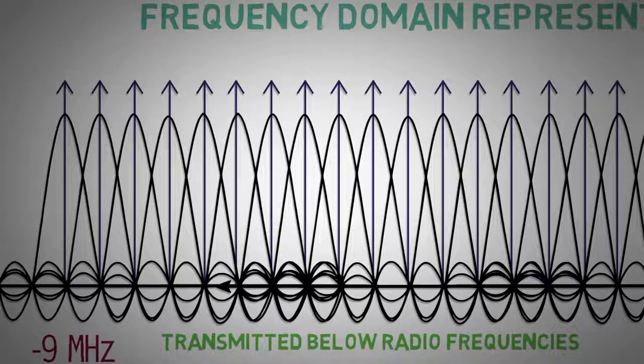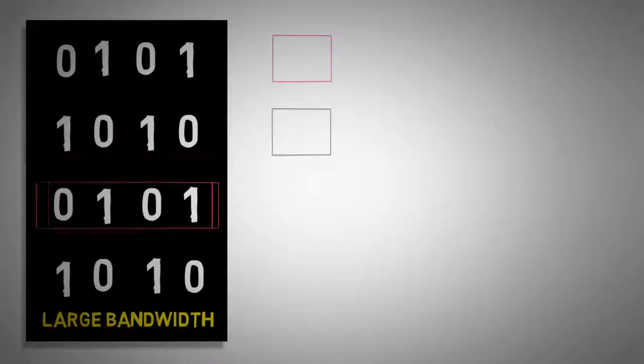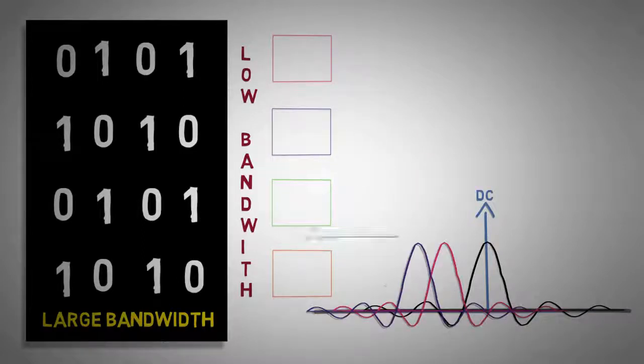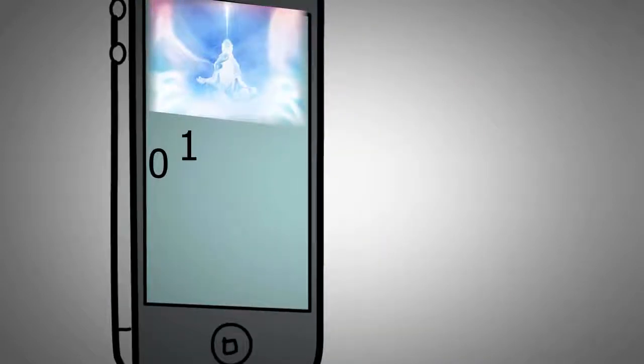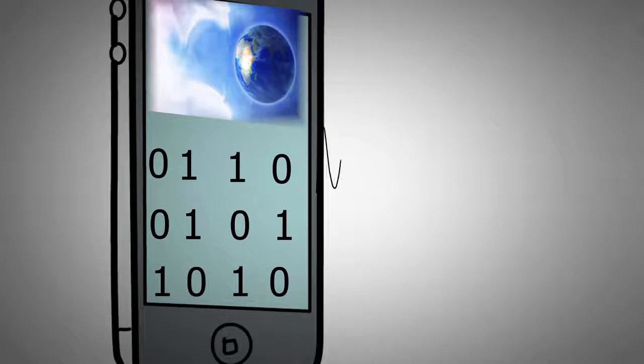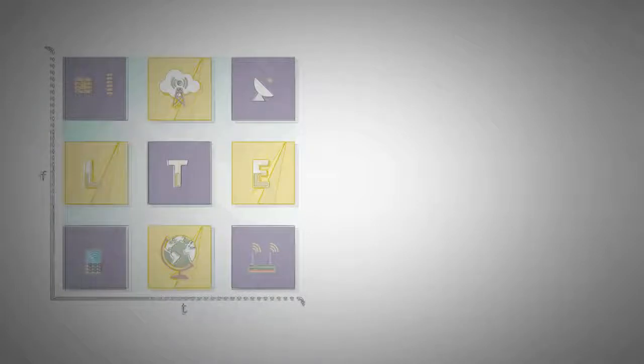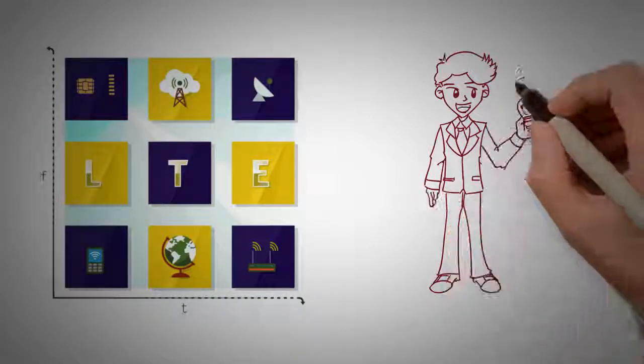So friends, today we learned how information is split into smaller sub-carriers in multi-carrier modulation, and how efficiency was increased by placing them orthogonally. In our next video we will show how data starts its journey as a stream of bits and are finally transmitted as radio signal. So friends, don't forget to subscribe to our channel, like our videos and comment your views or suggestions. Happy learning.